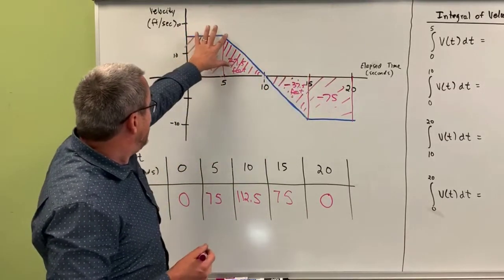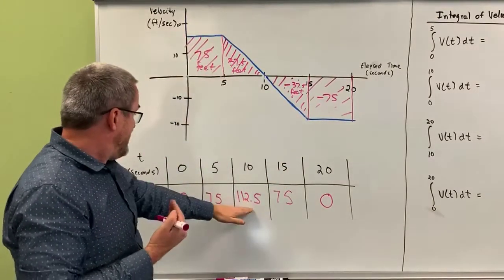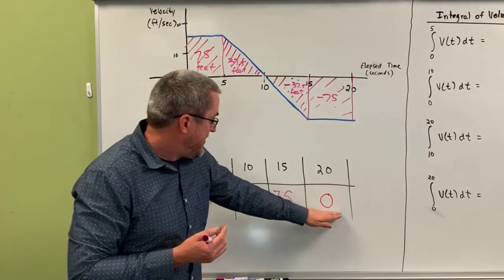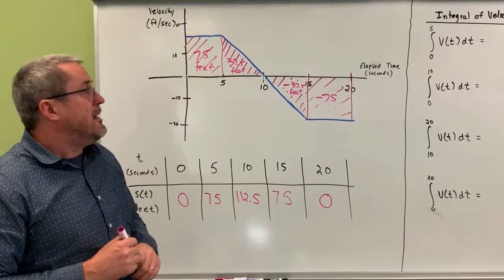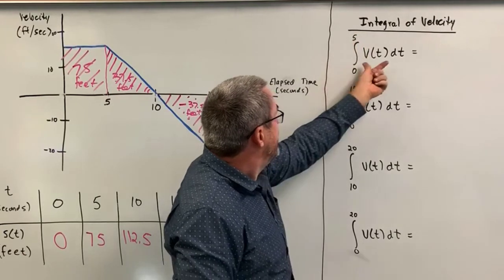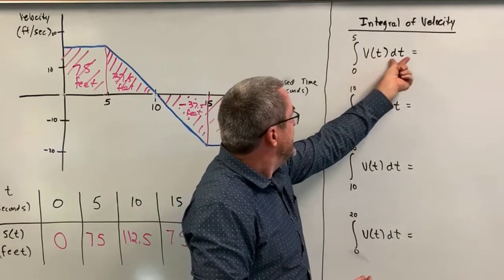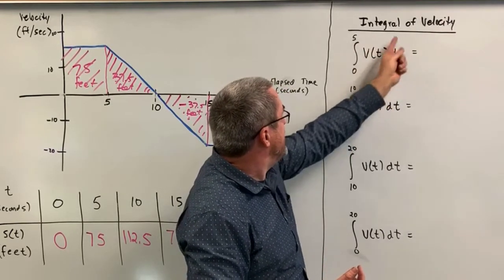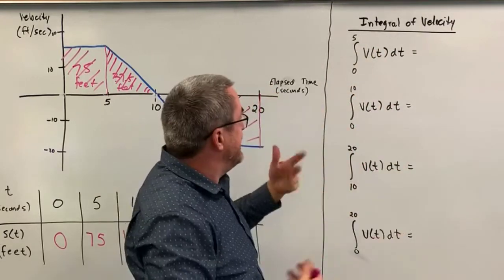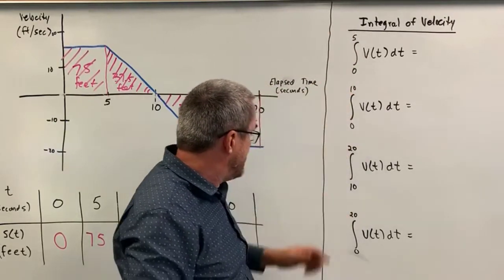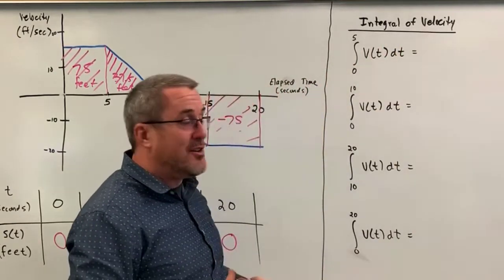The area underneath this curve — positive area means the train's coming towards the station 112.5 feet, negative area meaning the train moved back away from the station 112.5 feet to get back to its original starting position. We can express these areas using the idea of the integral, because what we're doing is summing up velocity in feet per second times delta t — change in time measured in seconds. That product measures feet, and if we accumulate how much distance has been traveled during each time interval, we can express that distance as the integral of velocity.